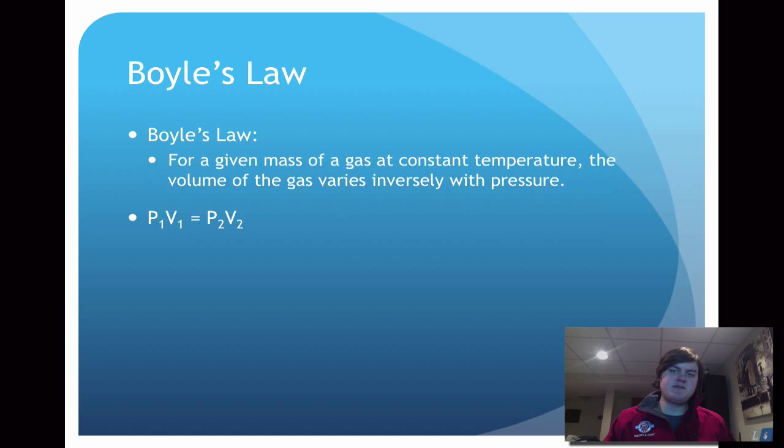This is represented by the mathematical equation P1V1 equals P2V2. The P's both represent pressure and the V's both represent volume. The 1 and the 2 are the distinguishers that we need to pay attention to. P1 and V1, that is the initial pressure and volume. And then something changes to the system, and we end up with P2 and V2, which are the pressure and volume after that change has occurred.